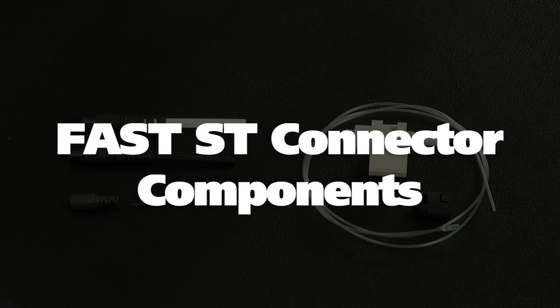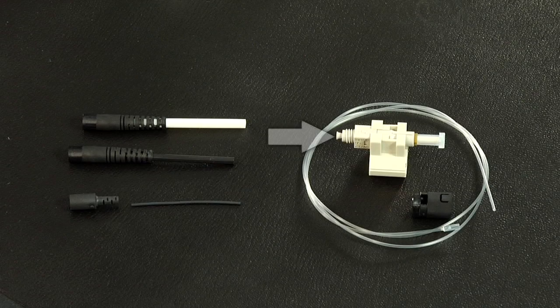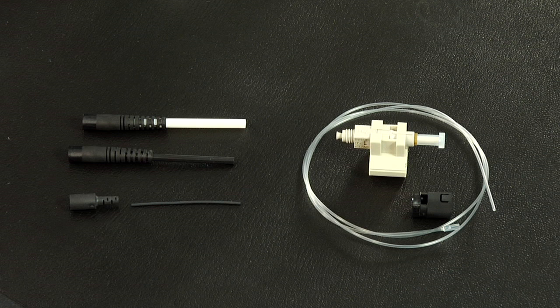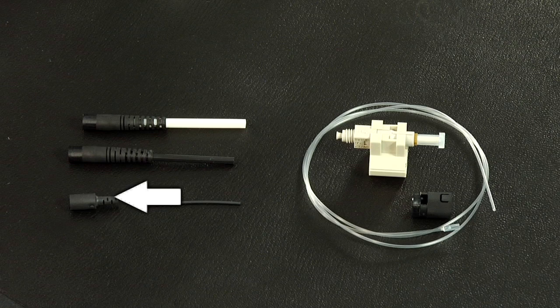The fast ST connector components: fast ST connector assembly, a 250 micron protective tube, a clear protective tube, a three millimeter boot, a two millimeter boot, and a 900 micron boot.